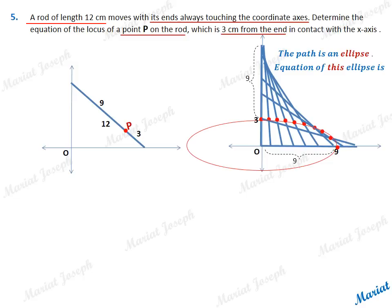To get the equation of this ellipse, as you can see, the semi-major axis is 9 units and the semi-minor axis is 3 units. So the equation of the ellipse must be x squared upon 9 squared plus y squared upon 3 squared equal to 1.